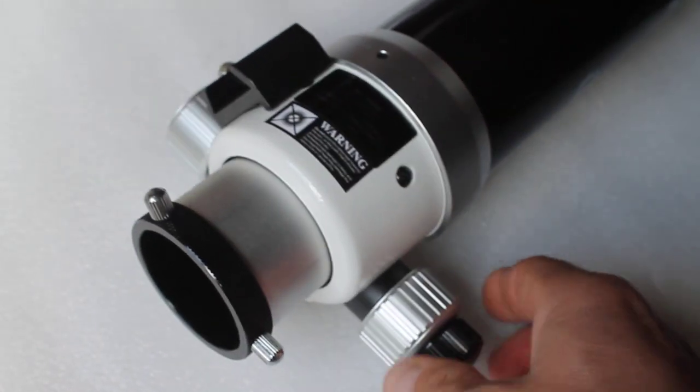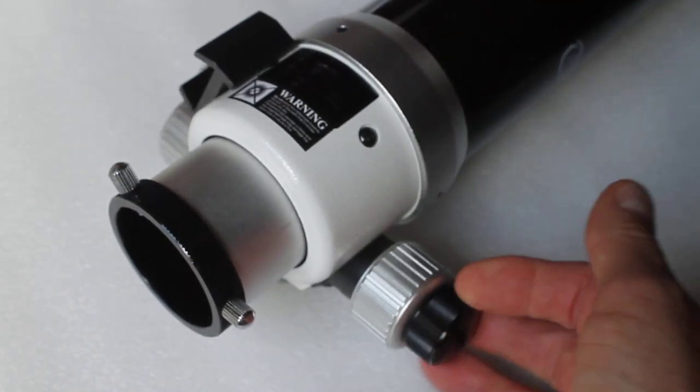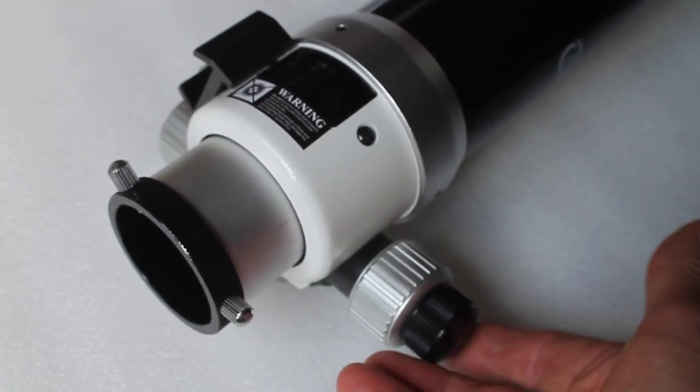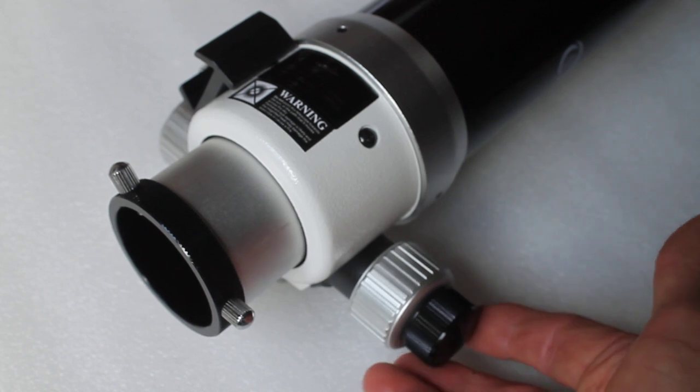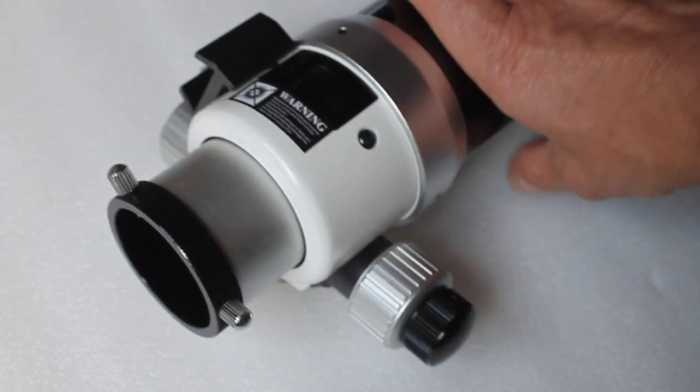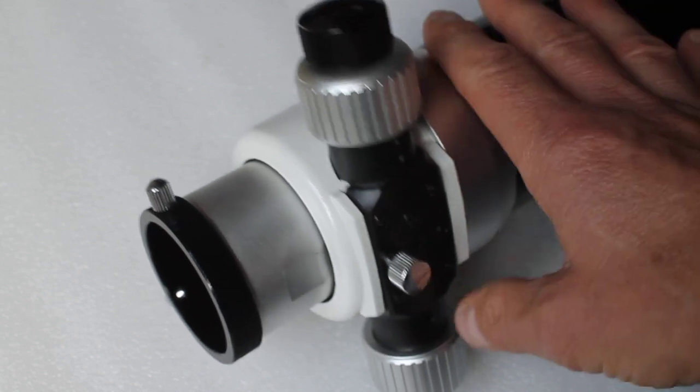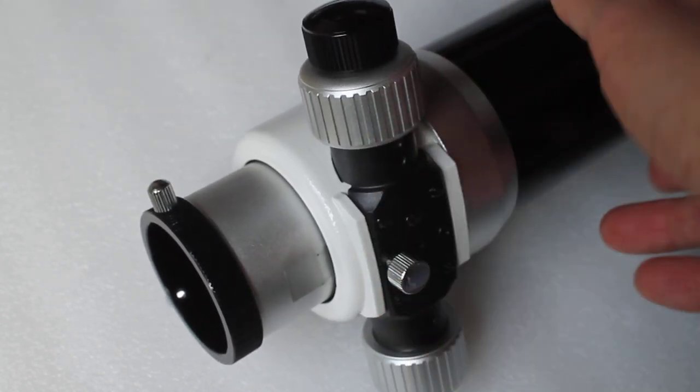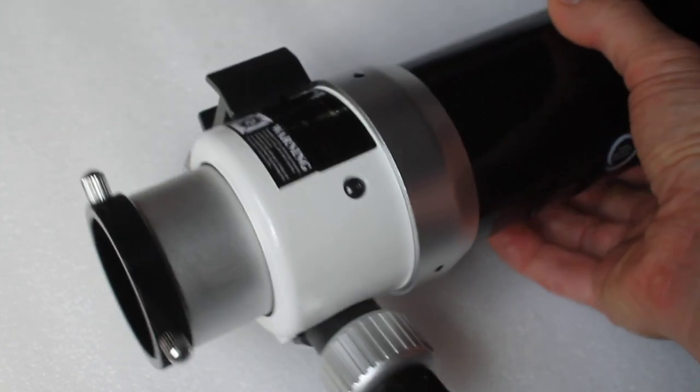On the opposite side, you have the fine adjustment as well, which is really silky smooth to use. On the underside, as with all Sky-Watcher scopes, you have the little tightener there.